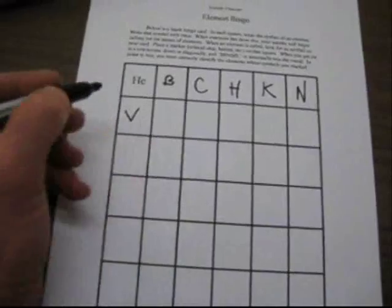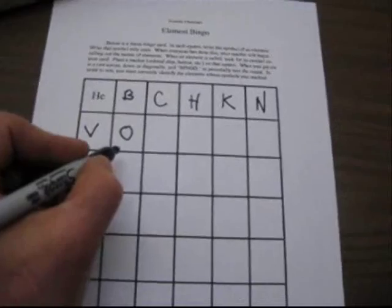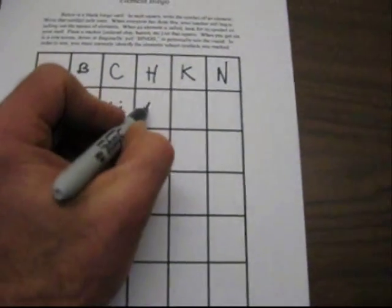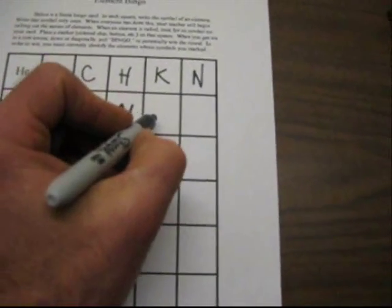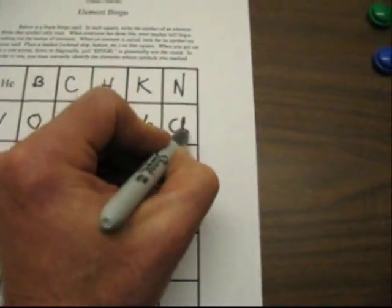We may have something like K for potassium, N for nitrogen. And then we'll just continue on here. Something like V for vanadium, O symbol for oxygen, lithium, aluminum, sodium Na, chlorine Cl.